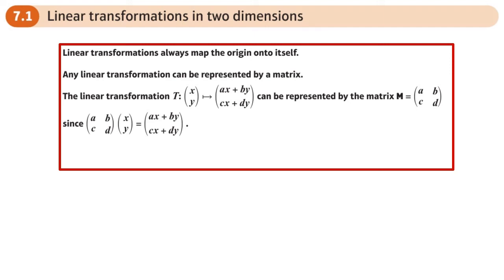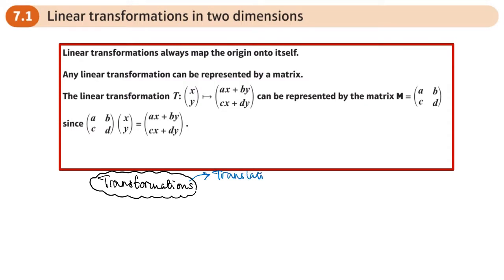This is the first section of chapter 7 in the Core 1 book: Further Maps, Linear Transformations. We're looking at linear transformations in two dimensions. At GCSE, we studied different types of transformations: translations, where things get moved around using a translation vector, enlargements, reflections, and rotations.